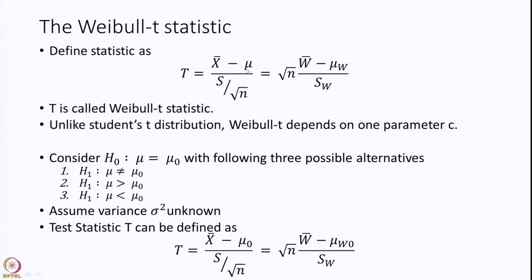It depends on the degrees of freedom n minus 1 because we have estimated x-bar, and it will also have another parameter along with it, which is C. Now we consider the testing of the hypothesis mu is equal to mu 0 against the three alternatives H1, H2, and H3 — there is a mistake here that needs to be corrected. So it is H1, H2, and H3.